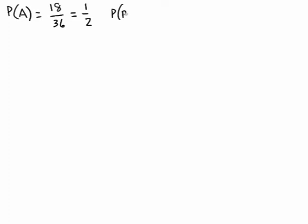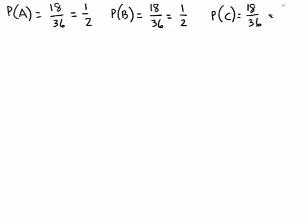Now the probability of B, the event that we get an even number, is again there are 18 even numbers divided by the 36 possible numbers, so it is again one-half. And then the probability of C, the event that we get a number that's no greater than 18, well of course there are 18 such numbers out of the 36, and again we have another half probability.